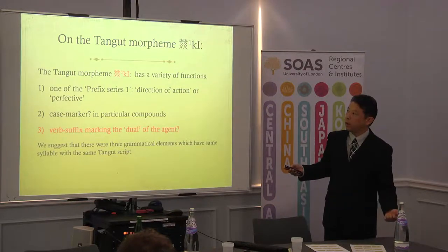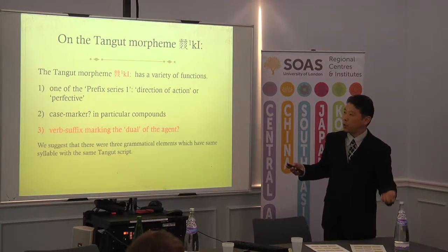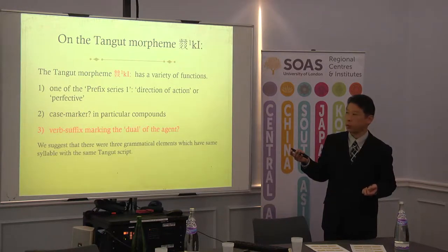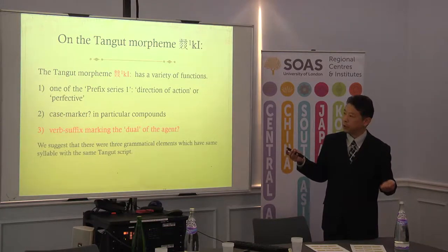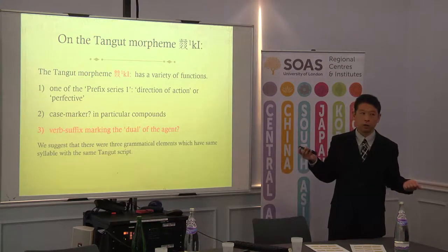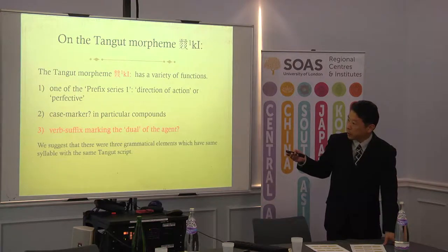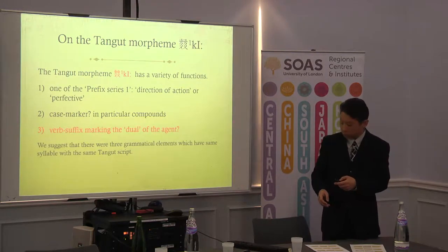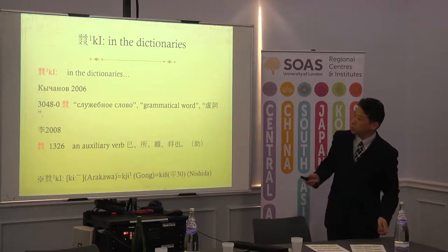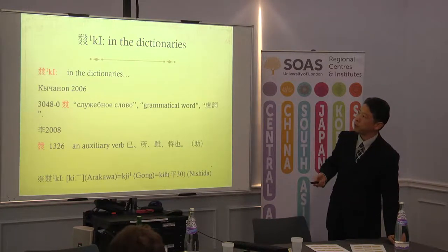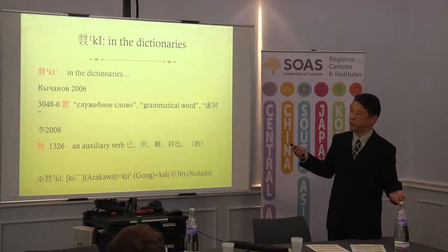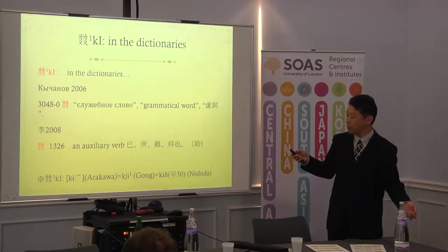It has various functions. First, it belongs to prefix series one, meaning direction of action or perfective. And in some cases, in particular compounds, it shows some case markers. Verb suffixes are marking a dual of the agent. Actually, in the previous dictionaries, there is not quite enough explanation for this morpheme.